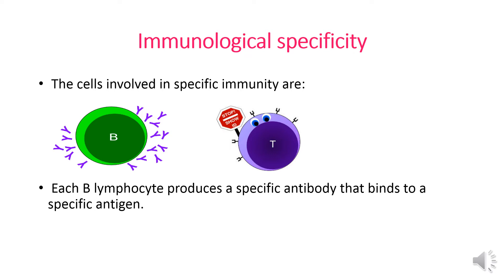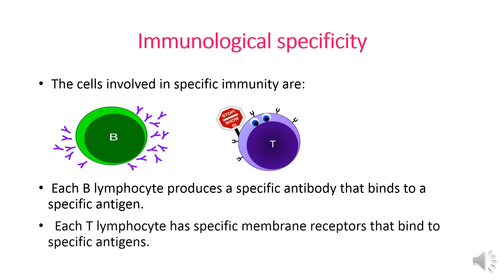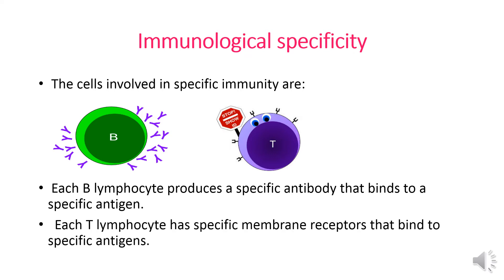Each T lymphocyte has specific membrane receptors that bind to specific antigens. Each kind of membrane receptor can bind to only one kind of antigen. This means there is a huge number of different T lymphocytes in our body.